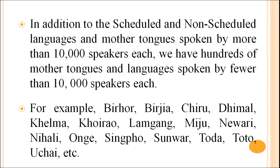In addition to scheduled and non-scheduled languages with more than 10,000 speakers, there are hundreds of mother tongues spoken by fewer than 10,000 speakers each. The census of India does not publish the names and speaker counts for these mother tongues. They include Birhore, Birjia, Chiru, Dhimal, Kelma, Khoirao, Lamkang, Miju, Nivkhi, Nihali, Ong, Singpho, Sunwar, Toda, Toto, Uchei, etc. There are hundreds of such mother tongues not listed because they are spoken by fewer than 10,000 persons each.